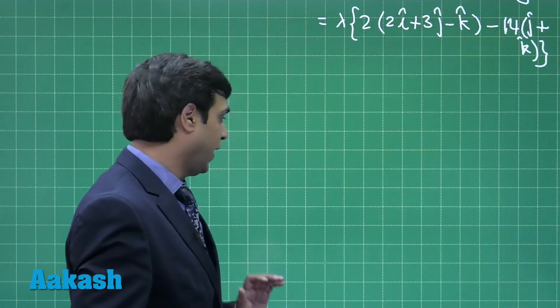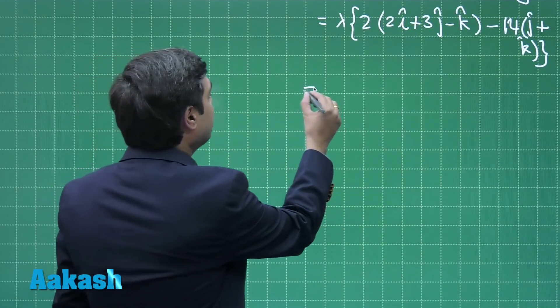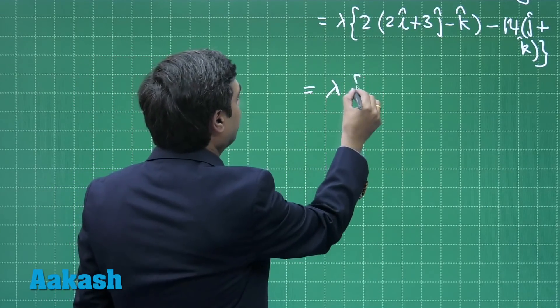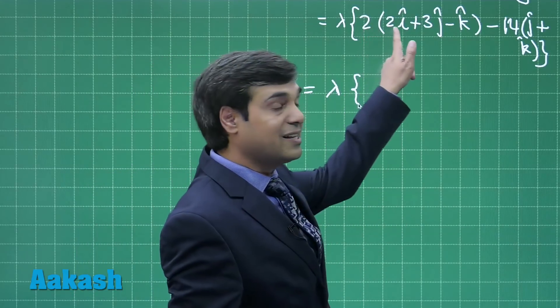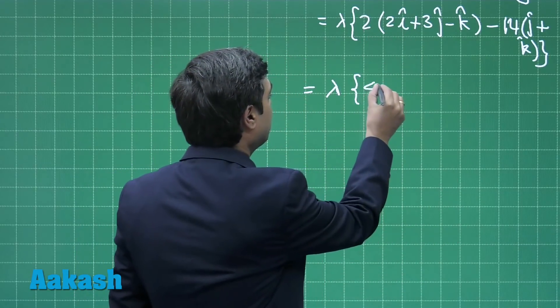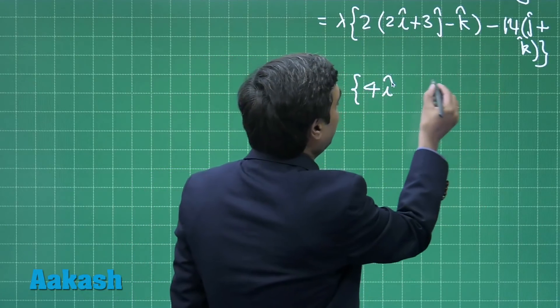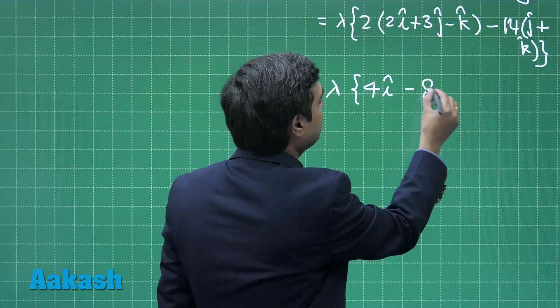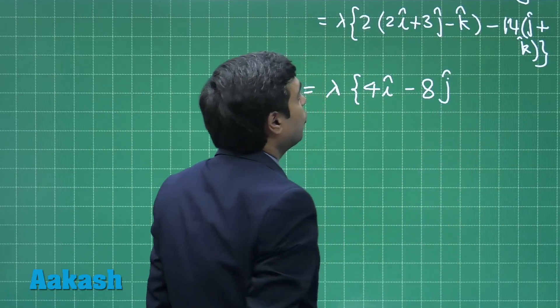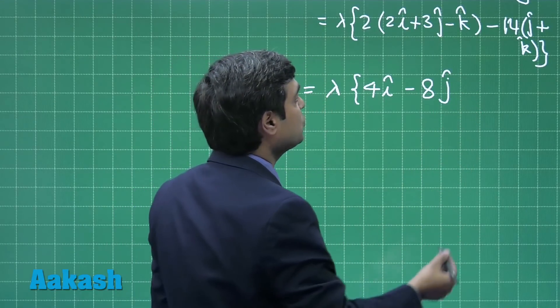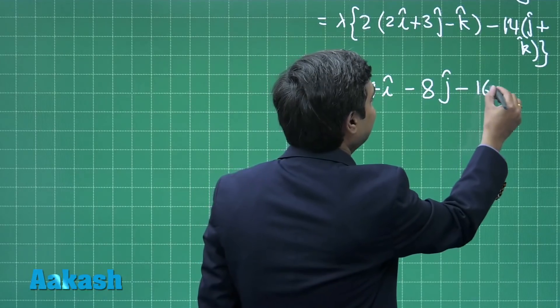This gives me u vector. Now simplifying it further, we can write lambda times coefficient of i is 4, coefficient of j is 6 minus 14, that is minus 8, coefficient of k, that is minus 2 minus 14, that is minus 16.